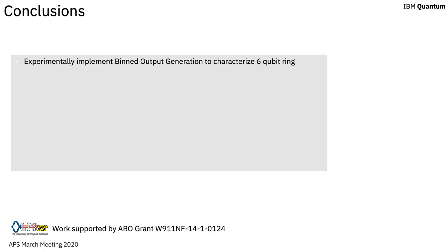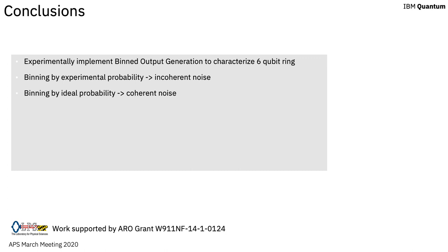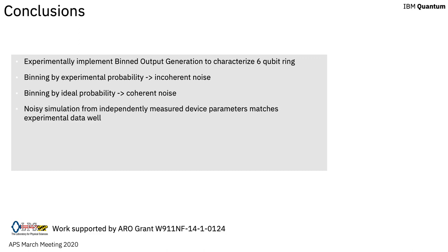In conclusion, we've experimentally implemented the binned output generation to characterize a 6-qubit ring. Binning by experimental probability gives a measure of incoherent noise, while binning by ideal probability gives a measure of coherent noise. Standard techniques able to detect coherent noise have difficulty characterizing 6-qubit systems. Our noisy simulation from independently measured device parameters matches the experimental data well, and our method correctly detects increases in added coherent and incoherent noise in the expected manner. Thank you for your attention.